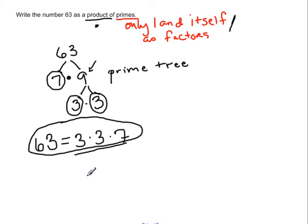We can always check our work by multiplying out. 3 times 3 we know is 9. 9 times 7 we know is 63. And because all these numbers in our product are primes, we know that we have the right answer.